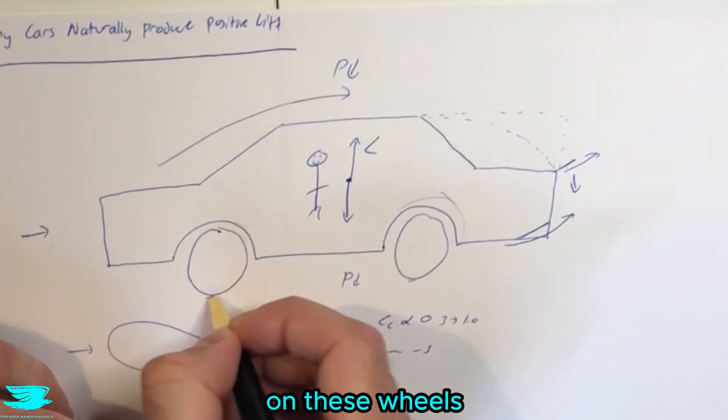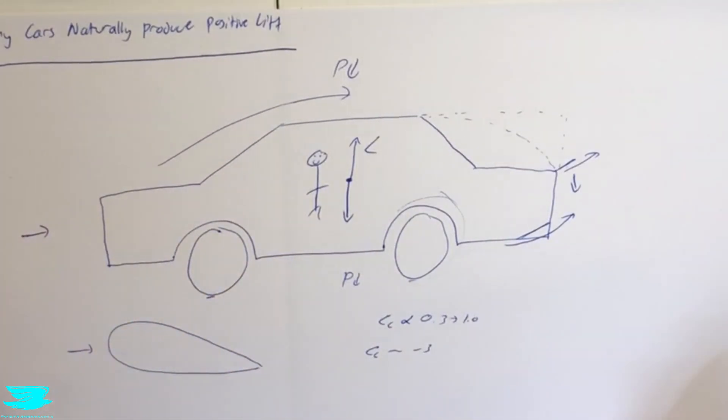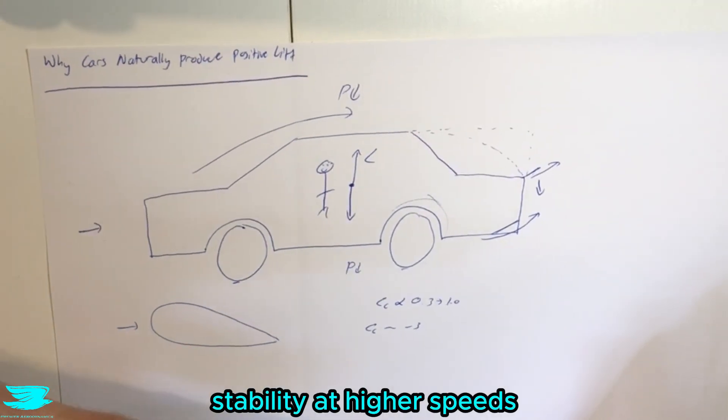which means that there's a lot of friction on these wheels. And that results in you can go around corners faster, you're not going to lose stability at higher speeds.